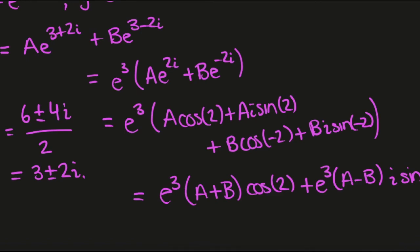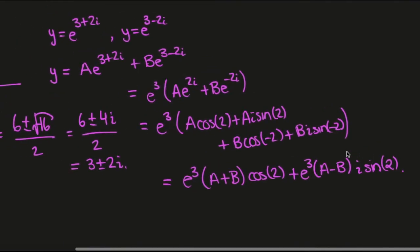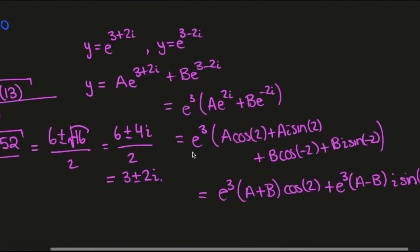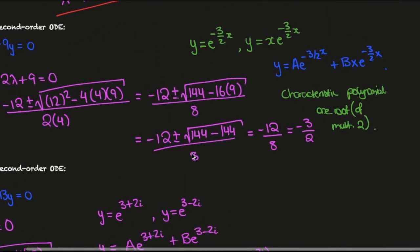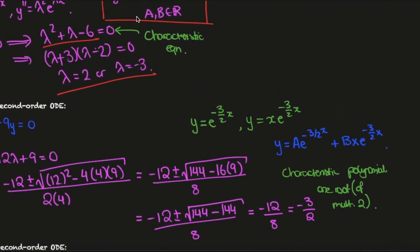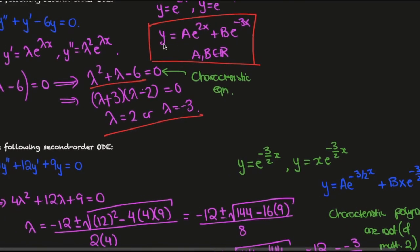If the characteristic polynomial has two complex roots, we use Euler's formula to reduce to cosines and sines. If we have one root of multiplicity 2, we introduce the x term. The easiest case is two distinct real roots, where we just take linear combinations.